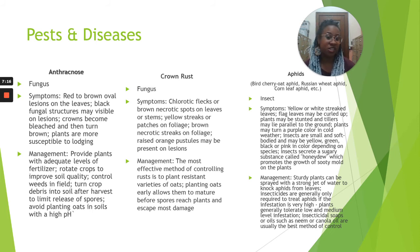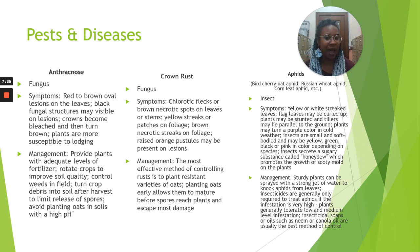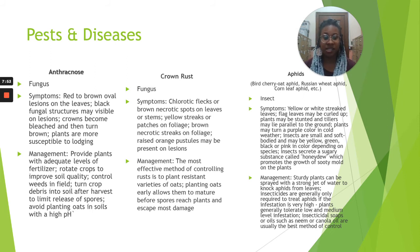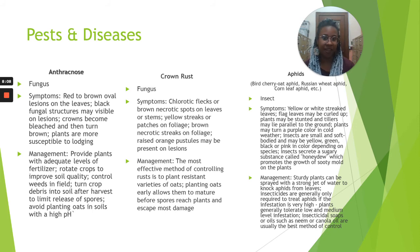Next, aphids, which are insects. Symptoms include yellow or white streaked leaves; flag leaves may be curled up, plants may be stunted, and tillers may lie parallel to the ground. Plants may turn a purple color in cold weather. Insects are small and soft-bodied and may be yellow, green, black, or pink in color depending on the species. Insects secrete a sugary substance called honeydew, which promotes the growth of sooty mold on the plants. Management: sturdy plants can be sprayed with a strong jet of water to knock aphids off the leaves. Insecticides are generally only required if the infestation is very high; plants generally tolerate low and medium levels. Insecticidal soaps or oils such as neem or canola oil are usually the best method for control.